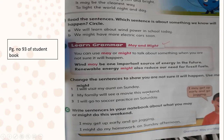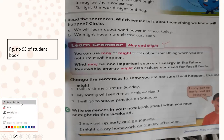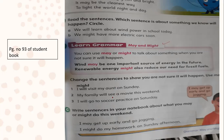'My family will see a movie this weekend' — what will you use here? You cross out 'will' and write either might or may. The answer is: 'My family might see a movie this weekend.' When we specifically mention days like Sunday, weekend, or Saturday, you'd use might. Next: 'I will go to soccer practice on Saturday' — cross out 'will' and use may or might. 'I may go to soccer practice on Saturday' or 'I might go to soccer practice on Saturday' — it's up to you.